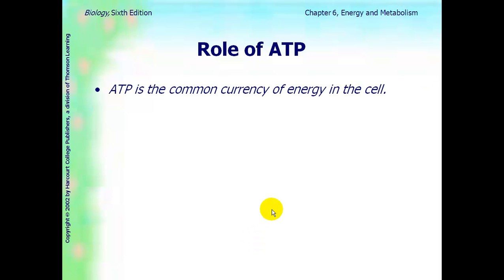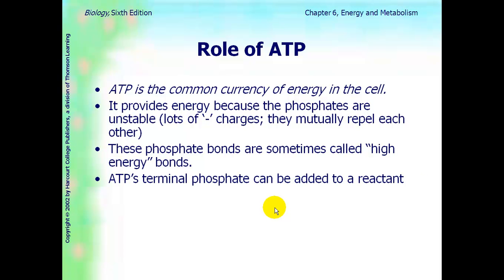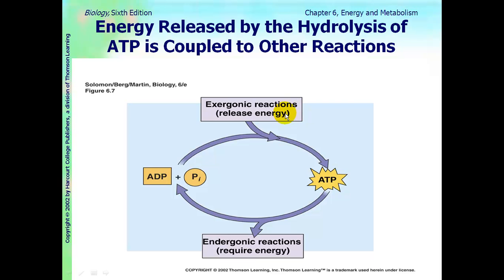The role of ATP. ATP is the common currency of energy in the cell. It provides energy because those phosphate bonds are very unstable. The phosphate bonds are sometimes called high-energy bonds. ATP's terminal phosphate can be added to a reactant. This is called phosphorylation. This process releases ATP energy in the cell. And ATP is broken down into ADP and inorganic phosphate. Energy is released by the hydrolysis of ATP. So as you can see, it's a cycle. ATP can be changed and broken down to ADP plus inorganic phosphate. And then ADP plus inorganic phosphate with energy input will be making ATP.